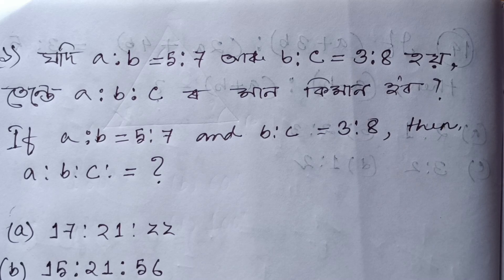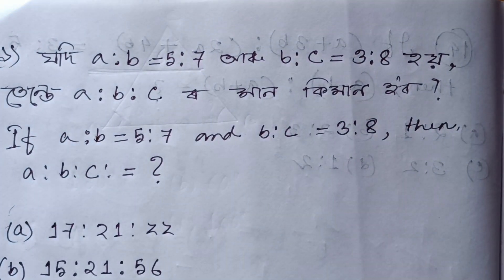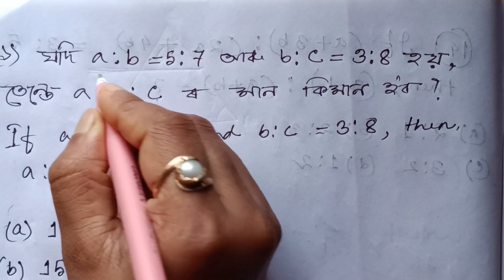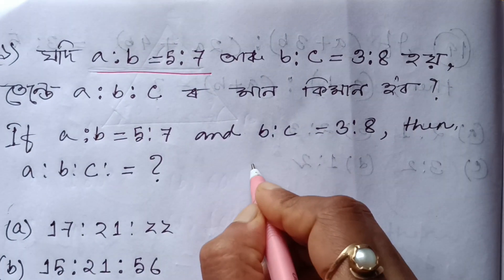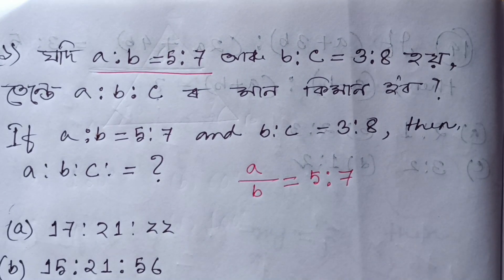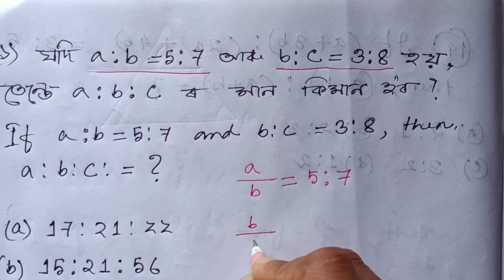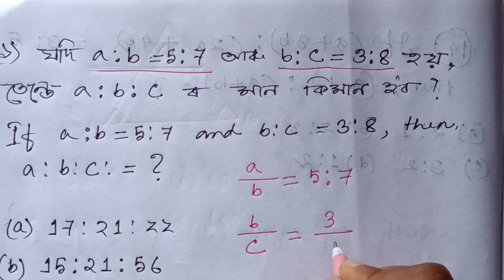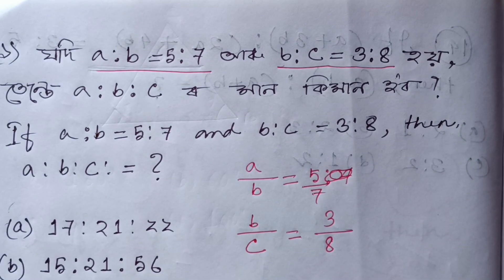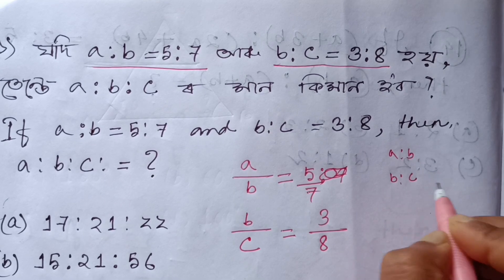First, this is A to B. A to B equals 5 to 7. Then A by B equals 5 to 7, and B to C equals 3 to 8.